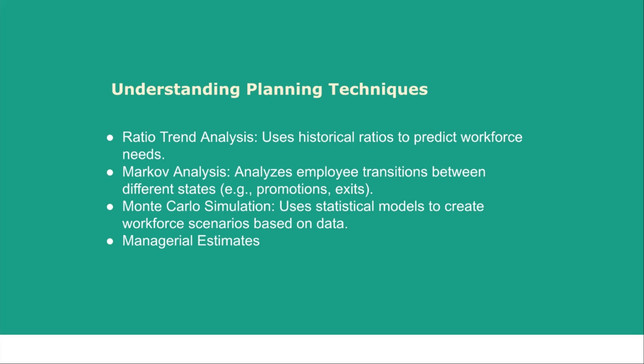We will explore different manpower planning techniques — starting with theory in video one, then practically from video two. We have three main techniques: ratio trend analysis, which uses past ratios to forecast future needs; Markov analysis, which focuses on workforce transitions and probabilities; and Monte Carlo, which creates different scenarios using data like attrition and hiring rates. We also use managerial estimates when data is unavailable, and Delphi when we hire experts.